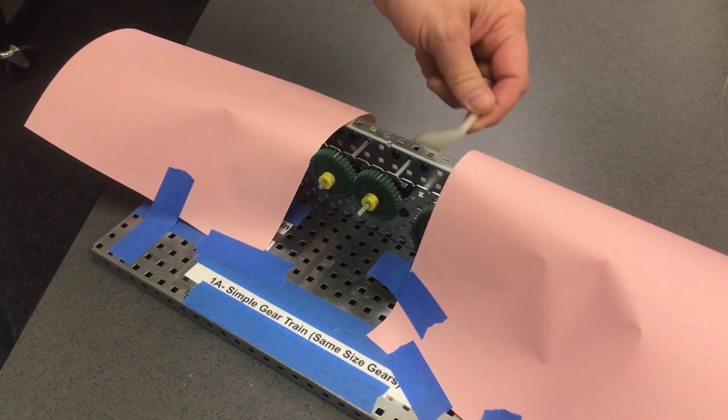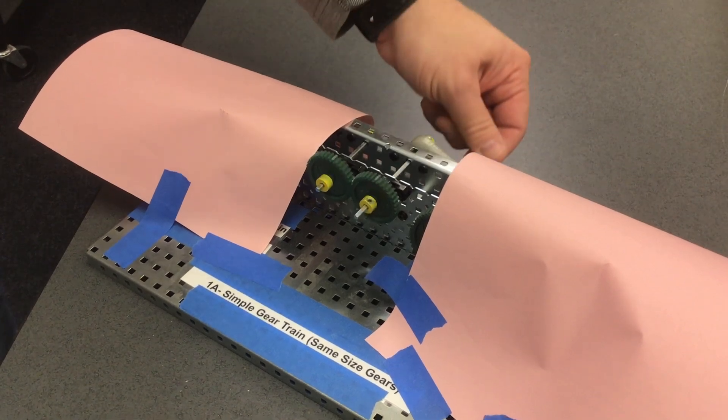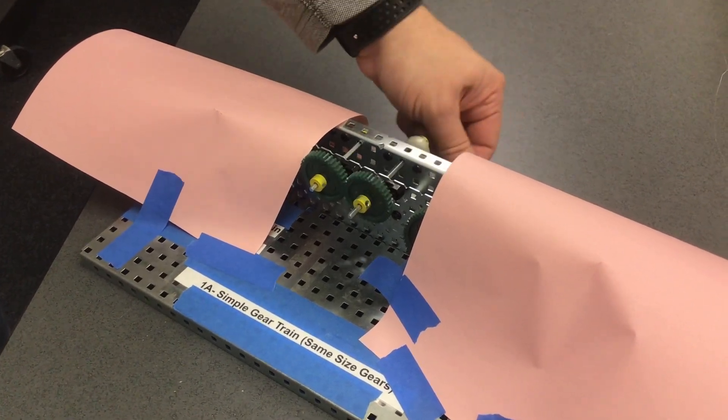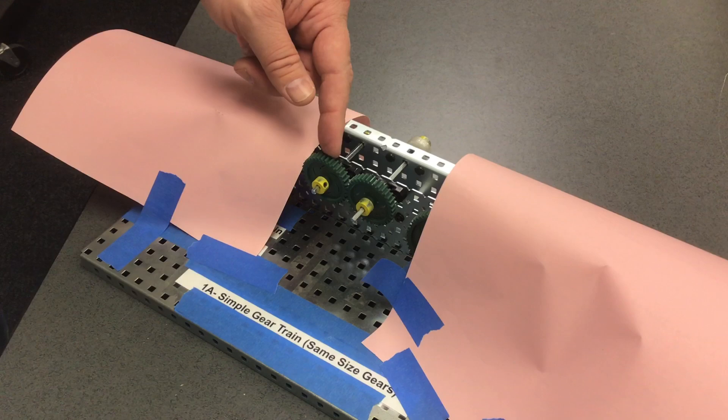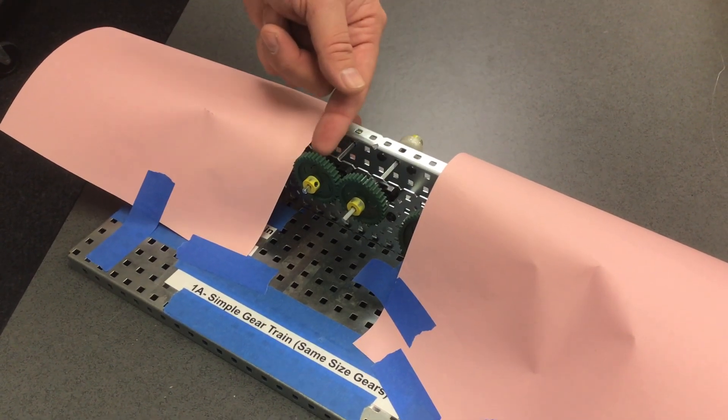The gear with the crank is the driver gear. It drives the gear with the power. The other gear is the driven or output gear, input to output.